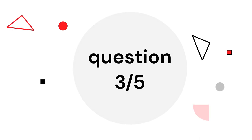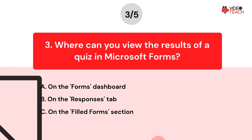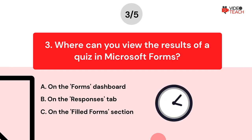Question number three. Where can you view the results of a quiz in Microsoft Forms? Option A: On the Forms dashboard. Option B: On the Responses tab. Option C: On the Filled Forms section. Now you have about 15 seconds to think about your answer.